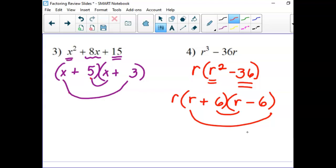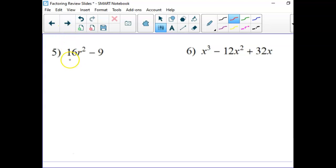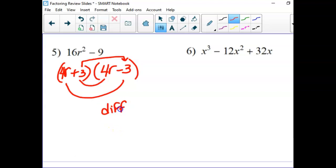Remember, difference of squares. So 5 is difference of squares. 4R plus 3 and 4R minus 3. 4R times 4R is 16R squared. This would be 12R and negative 12R if you did the middle. And this times this would be the negative 9 at the back. So again, difference of squares. Difference of perfect squares. Watch for that one.